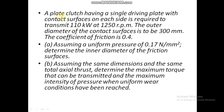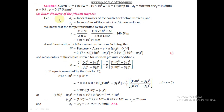Question 2: A plate clutch with a single driving plate having contact surfaces on each side is required to transmit 110 kW at 1250 rpm. The outer diameter of the contact surfaces is 300 mm, coefficient of friction μ = 0.4, and uniform pressure is 0.17 N/mm². Determine the inner diameter of the friction surfaces. First, calculate torque from power and rpm using T = P × 60 / (2πN).